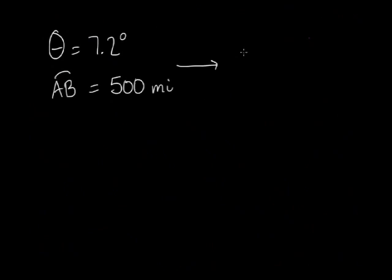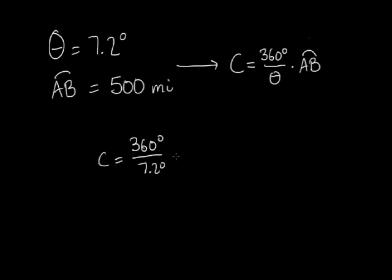So now we have this information. The angle theta is equal to 7.2 degrees, and the measure of the arc AB, or Alexandria and Syene, is 500 miles. With this information, all we have to do is feed this into the formula that we got earlier. C equals 360 degrees divided by theta times AB. We plug in 7.2 degrees for theta, we plug in 500 miles for AB. In the end, we find that C is equal to 50 times 500 miles, or 25,000 miles.